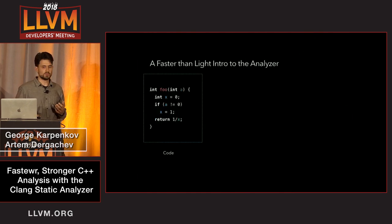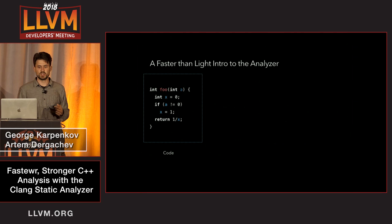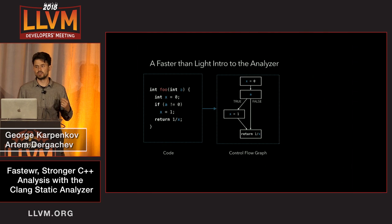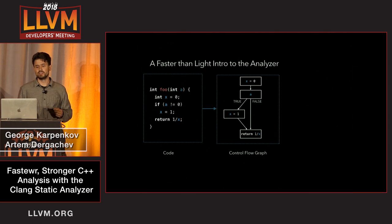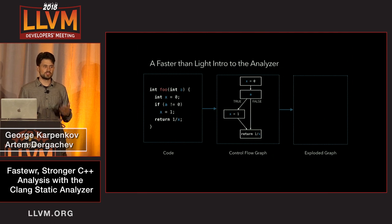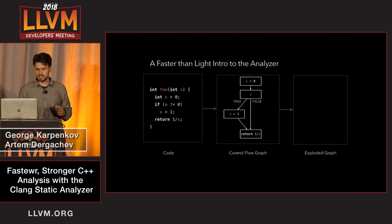For a short example of how it all fits together: there is a very simple four-line program where we take a parameter and return one over X depending on the branching. The analyzer starts by generating a control flow graph — a Clang control flow graph with Clang AST nodes inside. Each node in that graph has a Clang AST node inside, and the control flow graph shows all possible paths through the function. Then a so-called exploded graph is generated, which shows how the analyzer explores this control flow graph.